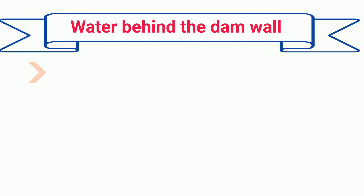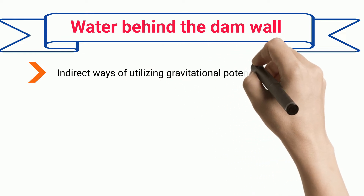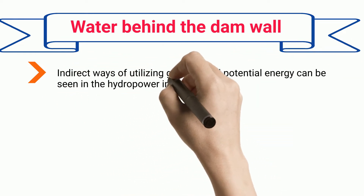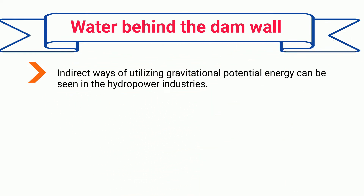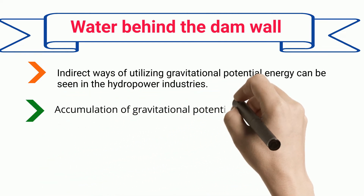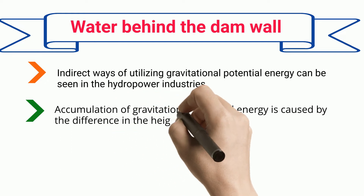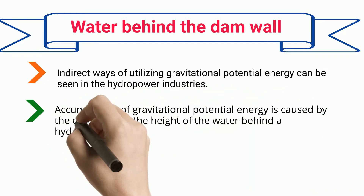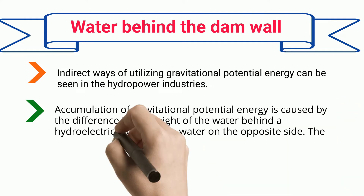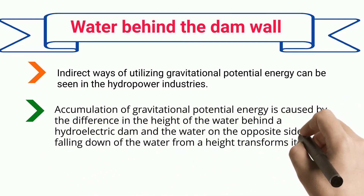Water behind a dam wall illustrates indirect ways of utilizing gravitational potential energy, as seen in the hydropower industry. Accumulation of gravitational potential energy is caused by the difference in height of the water behind a hydroelectric dam and the water on the opposite side.